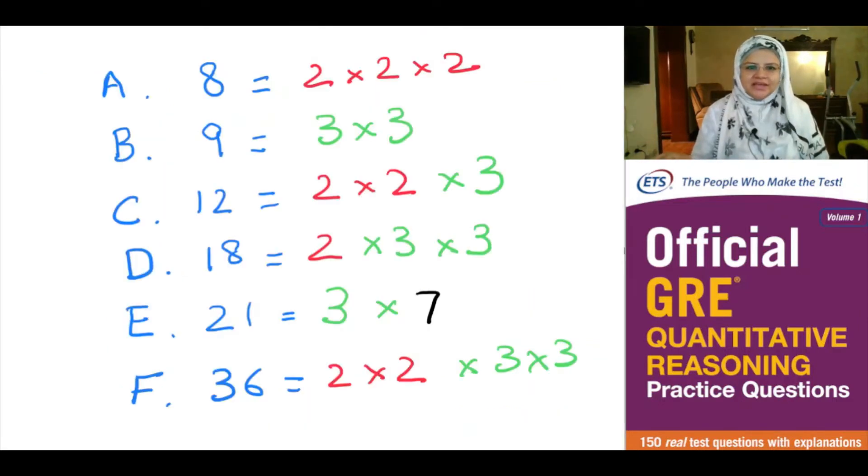Option A is 8, which is a multiple of 2 × 2 × 2. Option B equals 9, which is a multiple of 3 × 3. Option C equals 12, which is a multiple of 2 × 2 × 3.